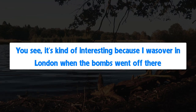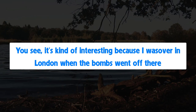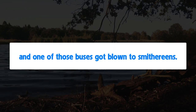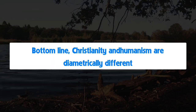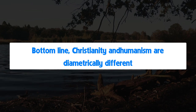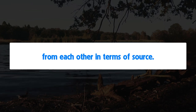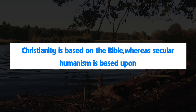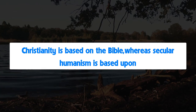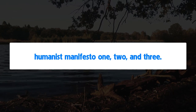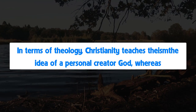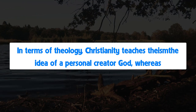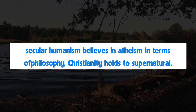It's kind of interesting — I was over in London when the bombs went off there and one of those buses got blown to smithereens. Bottom line: Christianity and humanism are diametrically different from each other. In terms of source, Christianity is based on the Bible, whereas secular humanism is based upon Humanist Manifesto 1, 2, and 3. In terms of theology, Christianity teaches theism — a personal creator God — whereas secular humanism believes in atheism. In terms of philosophy, Christianity holds to supernaturalism, whereas secular humanism believes in naturalism.